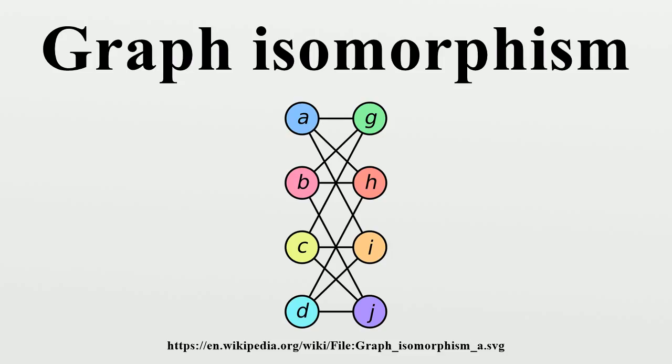The formal notion of isomorphism, e.g., of graph isomorphism, captures the informal notion that some objects have the same structure if one ignores individual distinctions of atomic components of objects in question.